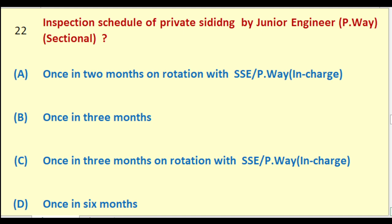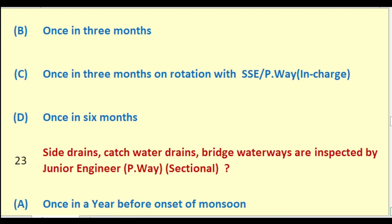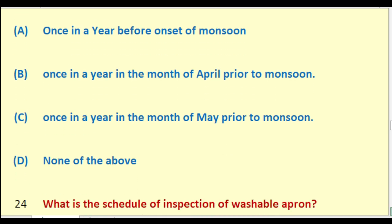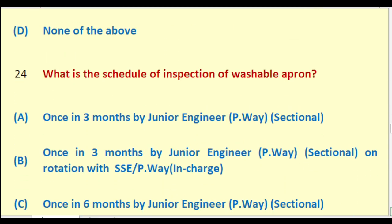Side drains, catch water drains, and bridge waterways are inspected by Junior Engineer Permanent Way Sectional: once in a year before onset of monsoon; once in a year in the month of April prior to monsoon; once in a year in the month of May prior to monsoon; none of the above. The right answer is: once in a year in the month of April prior to monsoon.